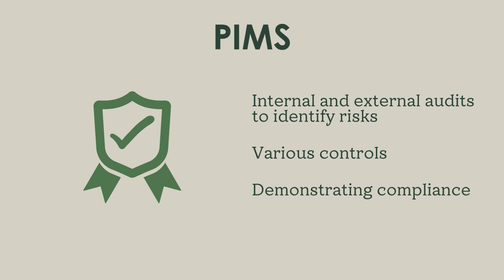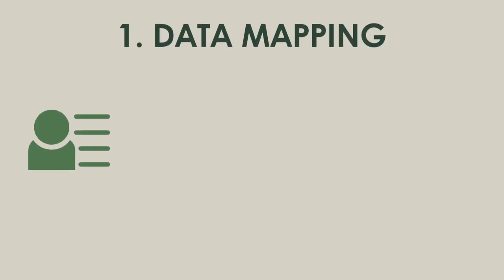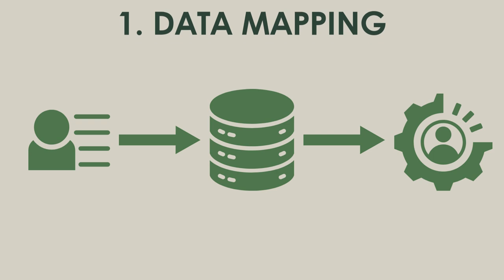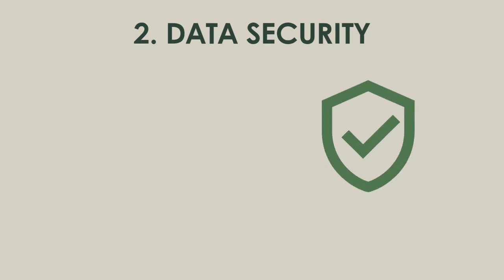A PIMS requires an organization to assess and manage the full lifecycle of personal information. This begins with identifying which personal information is being collected, as well as how it's being stored, processed, and shared, and ends with ensuring proper removal of the data when it's no longer needed or if a person's consent is withdrawn. The first step in implementing a PIMS is conducting a thorough data inventory — essentially mapping out all the personal information within an organization's systems and how it moves around within those systems. This means understanding where the information comes from, where it's stored, how it's accessed, and who has access to it. Once this mapping is done, the organization needs to implement various policies and procedures to safeguard the privacy of individuals' information at every stage.